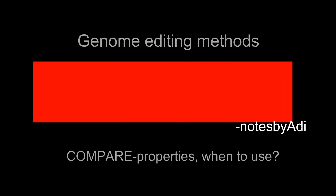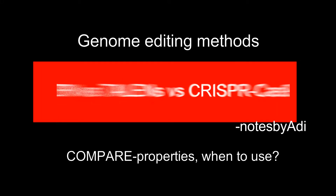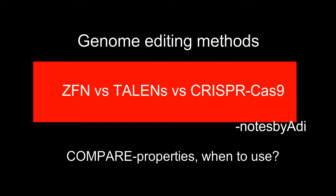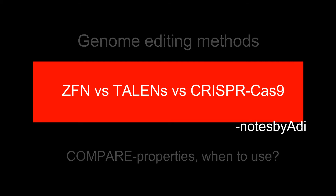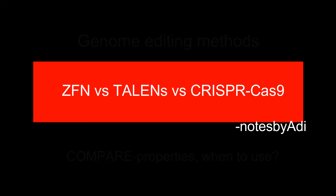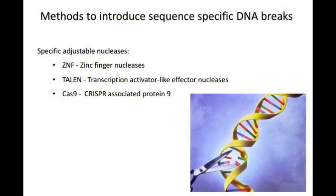We can try to edit a genome by using a DNA break at a target locus in the genome and then trying to modify the sequence at that point — editing it or inserting the gene of interest that we want. This process can happen through multiple technologies, and we will discuss three in this particular video.